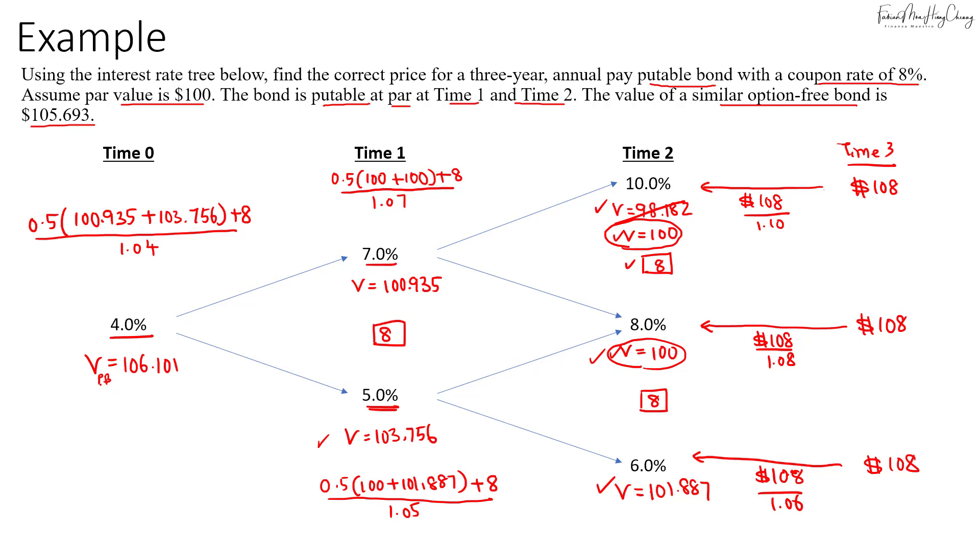If you're asked to find the value of the put option, just compare it with the value of the option-free bond, which is 105.693. The difference will give us the put option value. That's 106.101 minus 105.693, which equals 0.408.